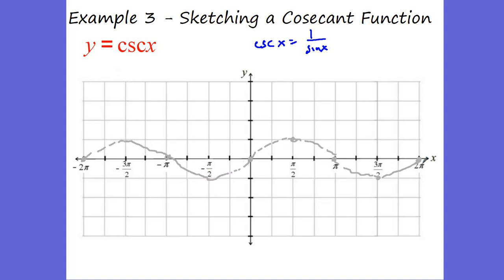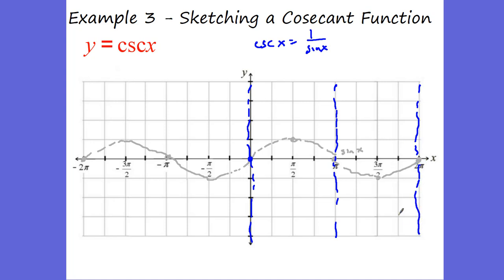That's my sine of x graph. So cosecant of x is going to be the reciprocal of this. What's the reciprocal of 0? It's undefined. And so you're going to have asymptotes at each of these little 0 points on your sine graph. There are your undefined values.